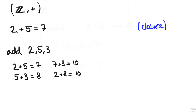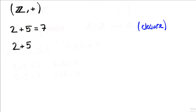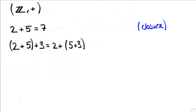We can write this down in one line using brackets. This expression means we add 2 and 5 first because they're inside the brackets, then add 3 to their sum; or we add 5 and 3 first, then add 2 to that sum. Because we know with addition that these two things are equal, the second property a binary operation needs to form a group is satisfied, and that property is called associativity.